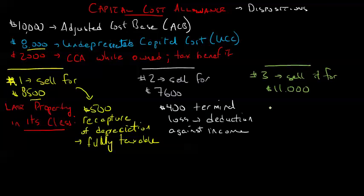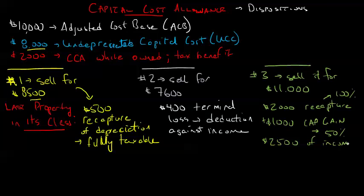In the third scenario, you're selling it for way more than its UCC. You're also selling it for more than its ACB. You're going to have to repay all of your depreciation. You're going to have a $2,000 recapture of depreciation. And you're also going to have, because you're selling something for more than its ACB, a $1,000 capital gain. The recapture of depreciation would be fully taxable. The capital gain is only half taxed. So you would have $2,500 of income related to the disposition of that property.